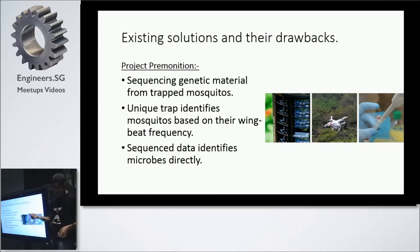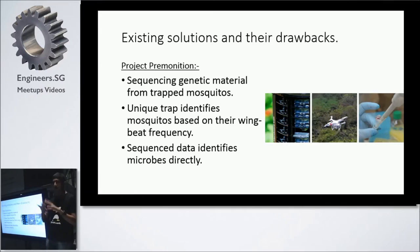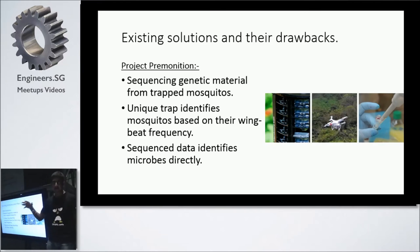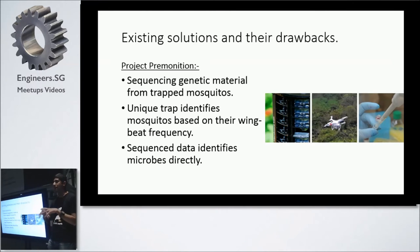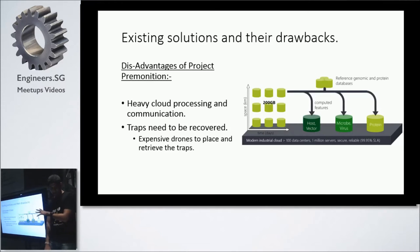Another solution is Microsoft's project called Premonition — a large-scale project run out of the Richmond office targeting the island of Grenada. They attach traps to DJI Phantom drones and leave them in the forest. The trap captures mosquitoes using wingbeat frequency, then they bring the trap back, extract the mosquito DNA, analyze it for what diseases it could carry, and make predictions via genomic sequencing. The disadvantages are it requires a lot of cloud processing, expensive traps, expensive drones — it's a big, expensive project still limited to a tiny island.